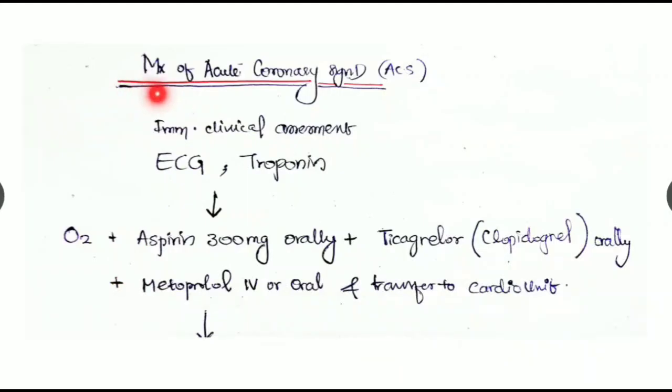Let's see the flow chart of management of acute coronary syndrome. Immediate clinical assessment is a must, followed by ECG, troponin measurement. Give oxygen with aspirin 300 mg orally and ticagrelor or clopidogrel orally 300 mg and metoprolol IV or orally, and transfer the patient to a cardio unit.